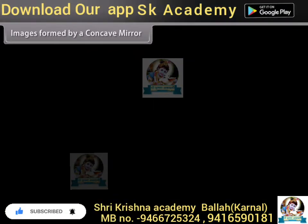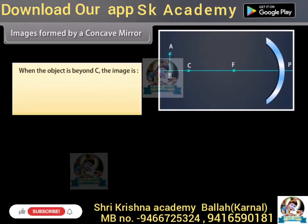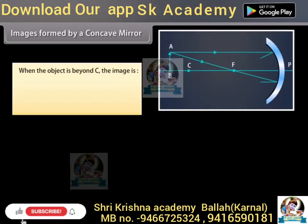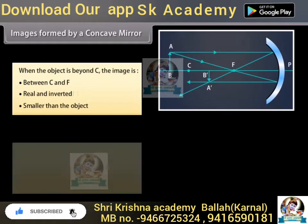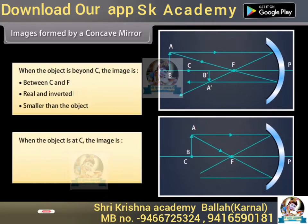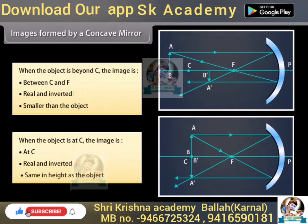Images formed by a concave mirror: When the object is beyond C, the image is between C and F, real and inverted, and smaller than the object. When the object is at C, the image is at C, real and inverted, and same in height as the object.